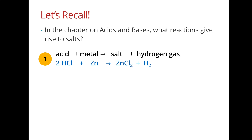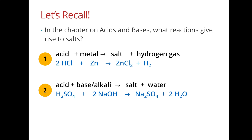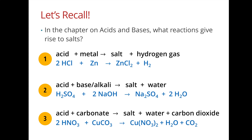The first reaction is between an acid and a metal, giving salt and hydrogen gas. For example, hydrochloric acid reacts with zinc to form zinc chloride and hydrogen gas. The second is an acid and an alkali — for example, sulfuric acid reacts with sodium hydroxide to form sodium sulfate and water. Last, an acid and a carbonate gives salt, water, and carbon dioxide — for example, nitric acid and copper(II) carbonate gives copper(II) nitrate, water, and carbon dioxide.